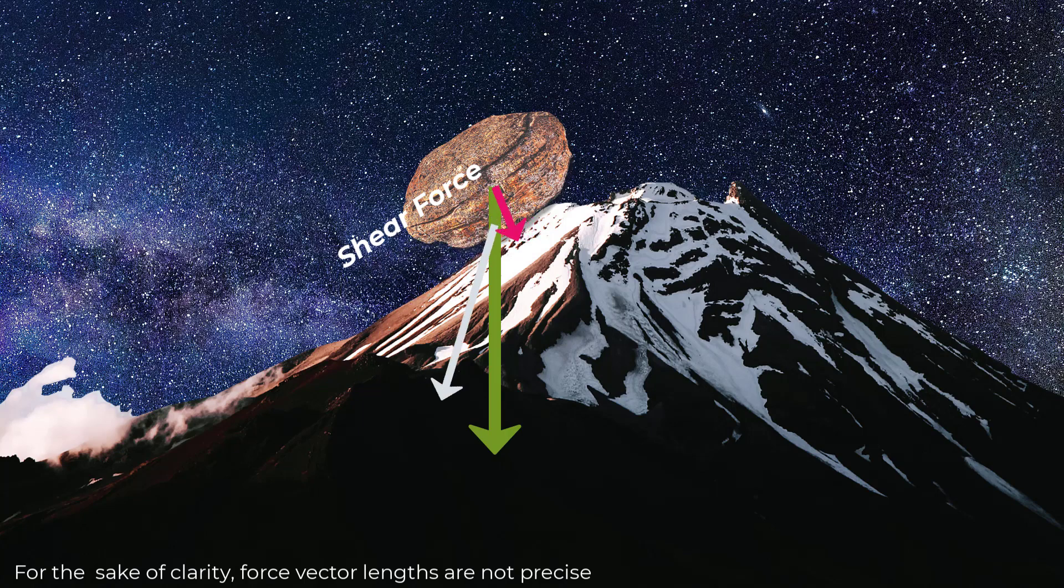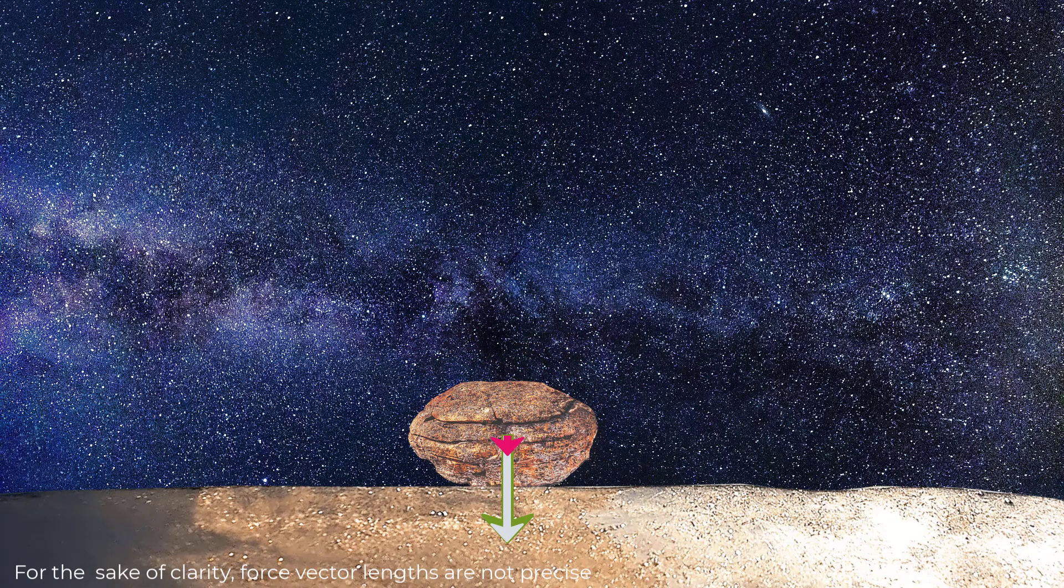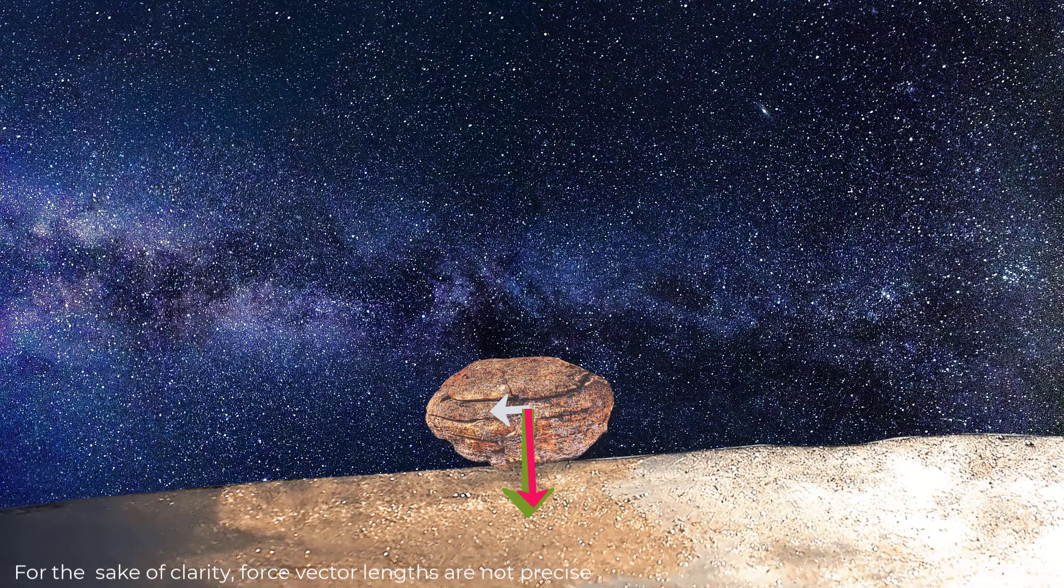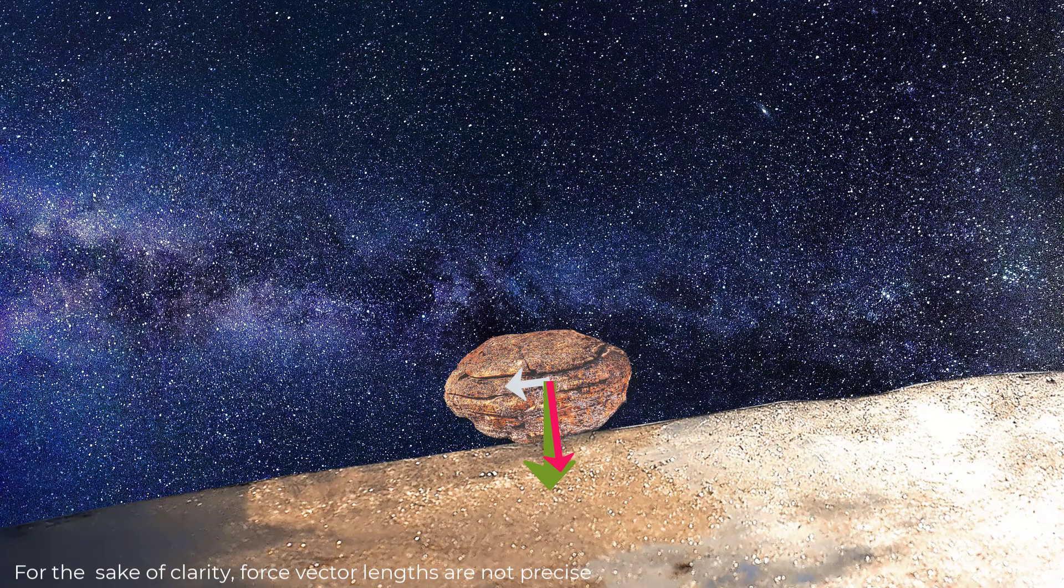The addition of these two forces always equals the gravity force. If our rock was sitting on ice, the rock would not move if the surface was flat. That's because all of the gravity force is pushing the rock straight down. But as you increase the slope, more and more of the gravity force is transferred over and used in the shear force direction. Because the rock is sitting on ice, it wouldn't take much of a slope for the rock to move downhill.